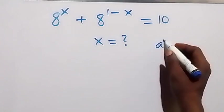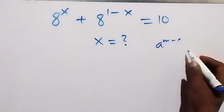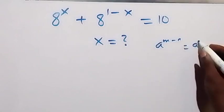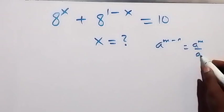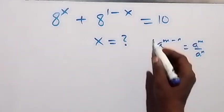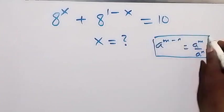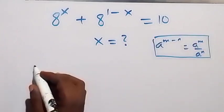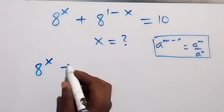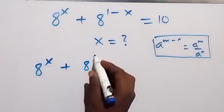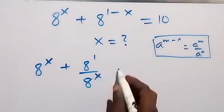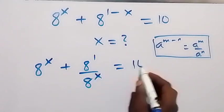From the law of indices, when we have a raised to power m minus n, this can be written as a raised to power m over a raised to power n. Applying this here, we have 8 raised to power x plus 8 raised to power 1 over 8 raised to power x, which equals 10.